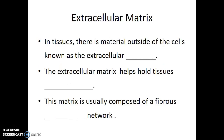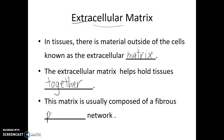Directly outside of these cells is something known as the extracellular matrix. The prefix 'extra' just means outside of, 'cell' referring to the cell, and 'matrix' being just a collection of proteins. In tissues, the material outside of the cells is known as the extracellular matrix. The extracellular matrix helps to hold tissues together and is usually composed of a fibrous protein network.